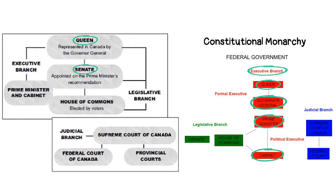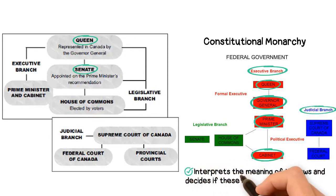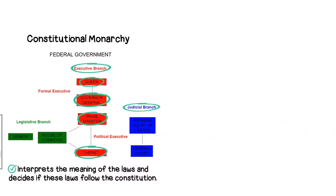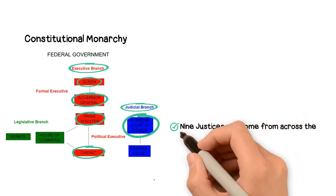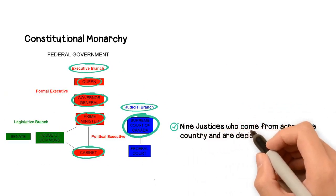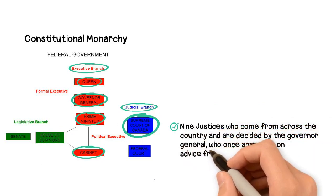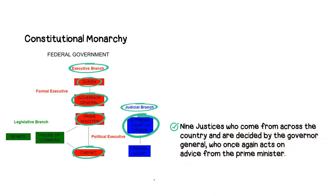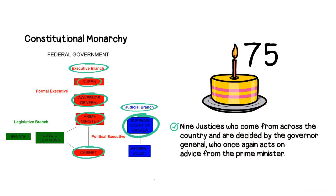The last branch of the Federal Government is the Judicial Branch. They interpret the meaning of laws and decide if these laws follow the Constitution. The Supreme Court is the highest court, and is made up of nine justices who come from across the country and are appointed by the Governor-General, who once again acts on advice from the Prime Minister. They also hold their job until they are 75 years old.